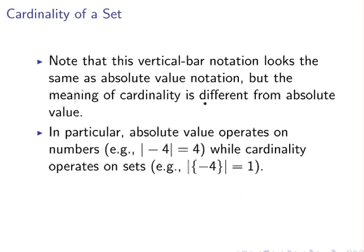But as we're going to see shortly, when cardinality operates on sets, we might have this set here which contains the element minus 4, and the cardinality of that set is 1. Again, it's because there is one element in that set.